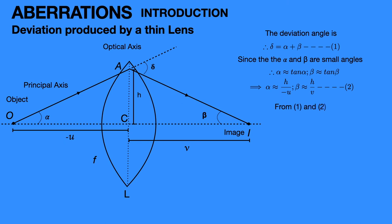Hence from equations 1 and 2, we know that δ = α + β. Putting α and β values in equation 1, therefore δ = H/(-U) + H/V. Taking H common in the above equation implies δ = H(1/V - 1/U). Hence the deviation produced by the lens is δ = H/F, because from the lens maker's formula, 1/F = 1/V - 1/U. Here U and V are the object distance and image distance from the optical axis of the lens.